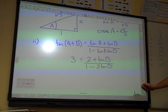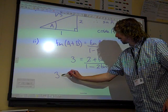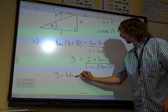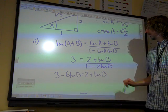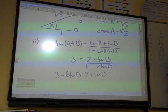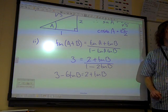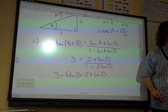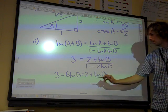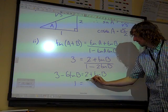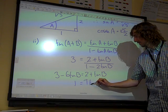If we multiply both sides by that denominator, we've got 3 minus 6 tan B is 2 plus tan B. Is that OK, taking that side up to the other side times by 3? Collect like terms. Let's get all the tan Bs on the right. We've got, I think we've got 1 there, haven't we?